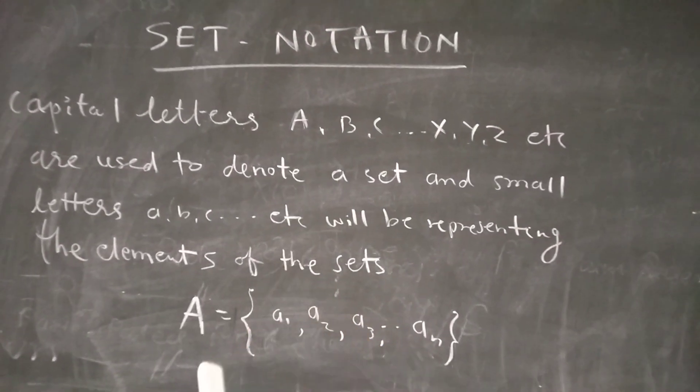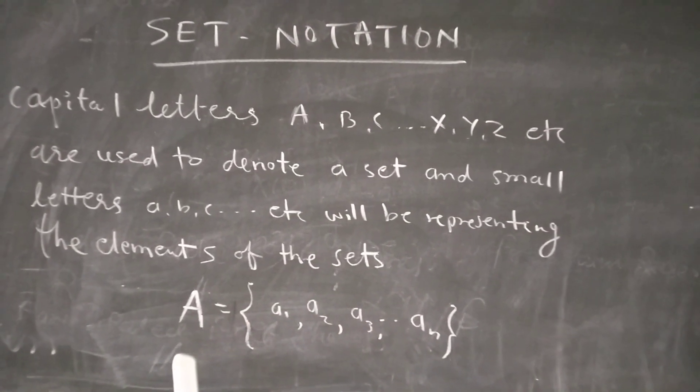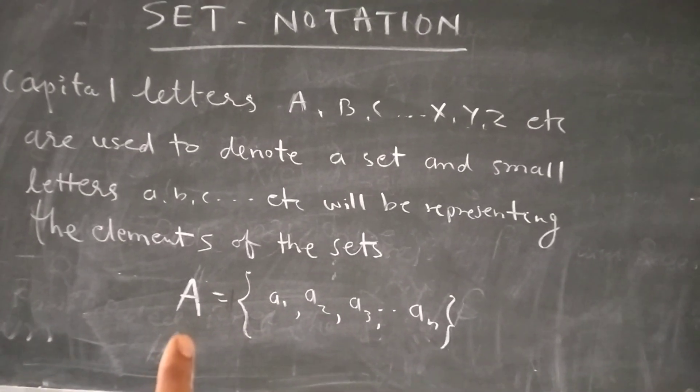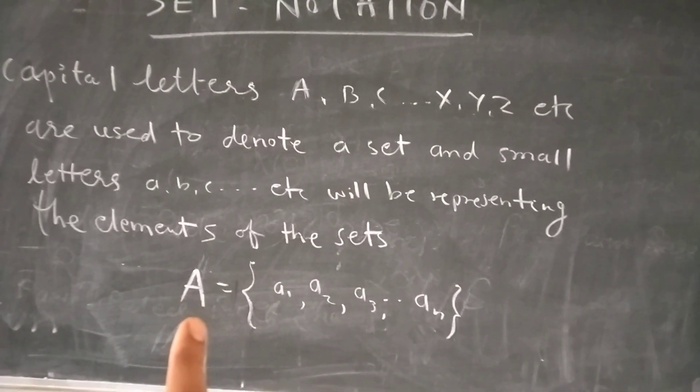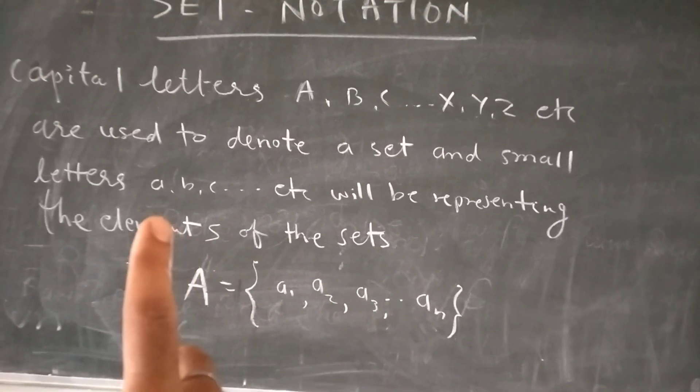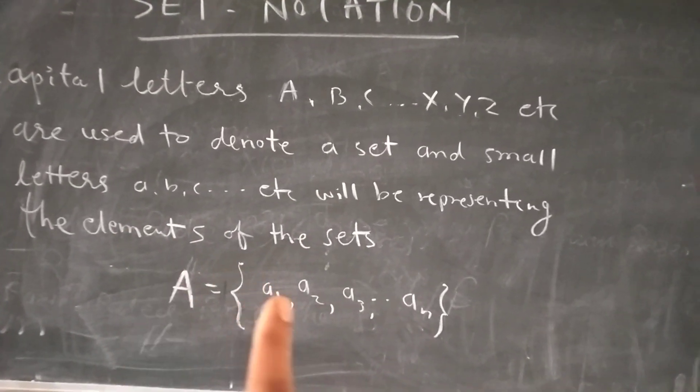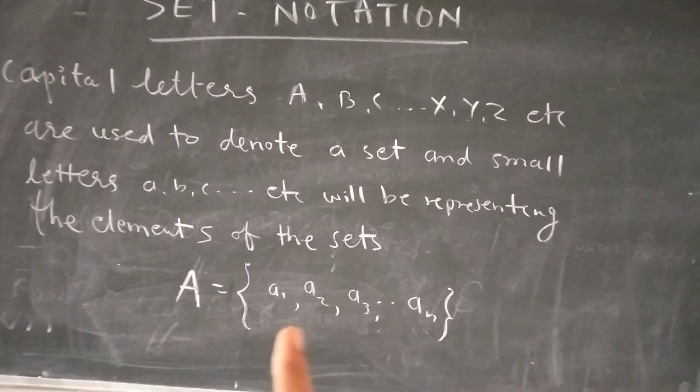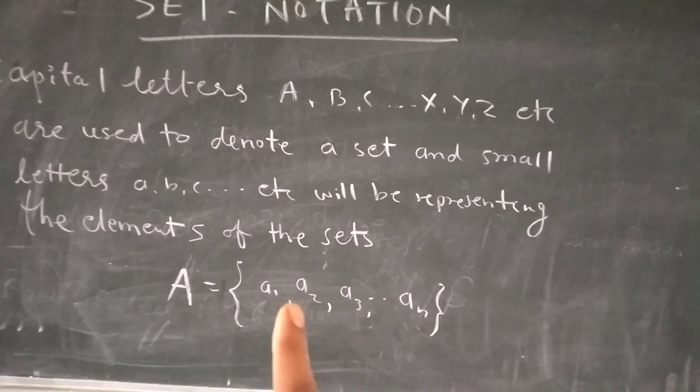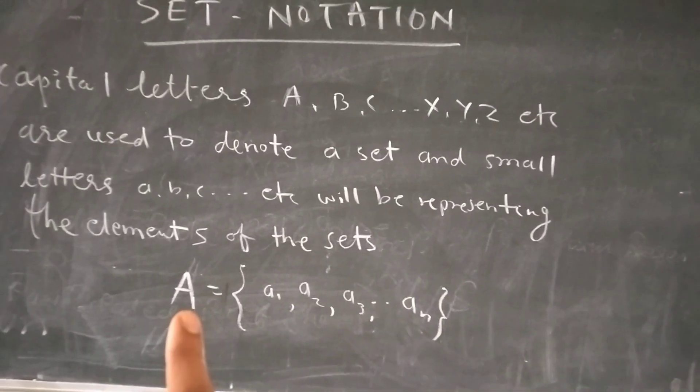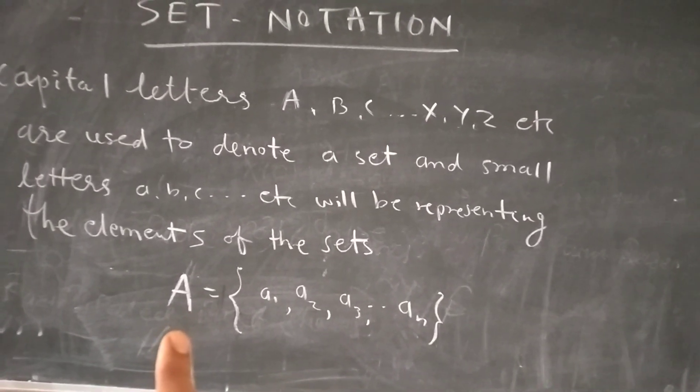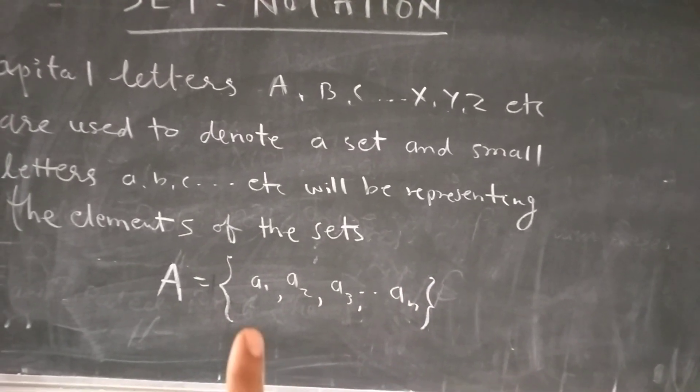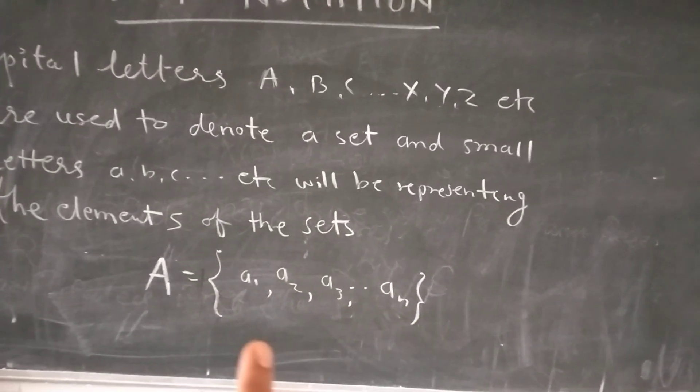Generally, we give some capital letters, English alphabet, like we say A is a set. And in that set, we give the name of set. In the set, all of the elements we call the elements, we call the curly brackets.